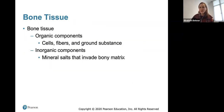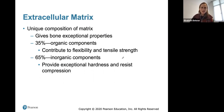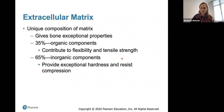Bones help with blood cell formation — the bone contains red marrow where red blood cells are formed. Bone also plays a role in energy metabolism, as osteoblasts secrete osteocalcin to help metabolize energy. Bone tissue is made up of organic components — cells, fibers, and ground substance — and inorganic components, which are mineral salts. The matrix is about 35% organic, giving tensile strength and flexibility, and about 65% inorganic, providing exceptional hardness to resist compression.